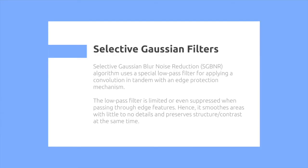Selective Gaussian filters: Selective Gaussian Blur Noise Reduction algorithm is a special low-pass filter for applying a convolution in tandem with an edge protection mechanism. The low-pass filter is limited or even suppressed when passing through edge features.